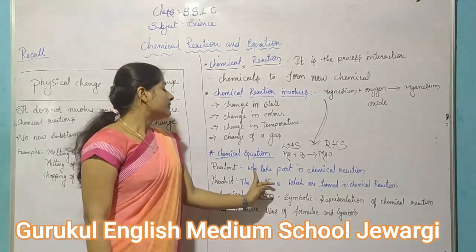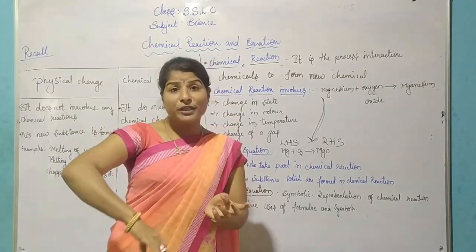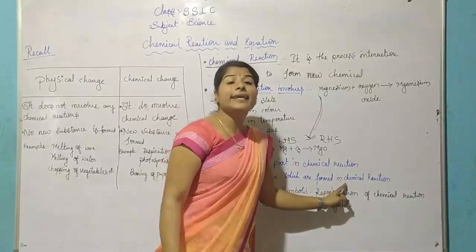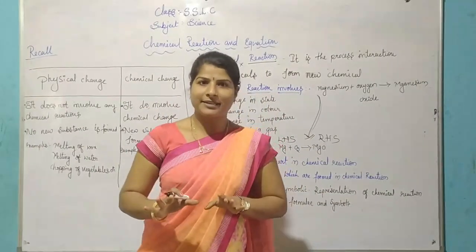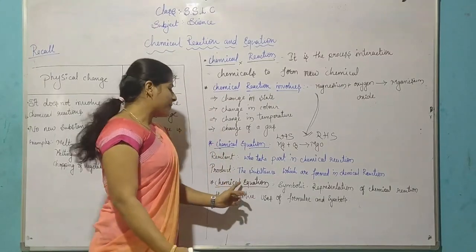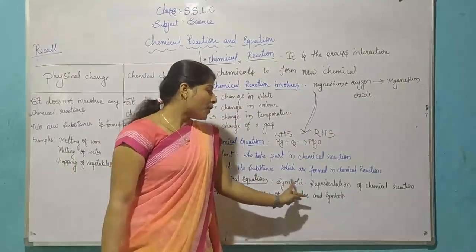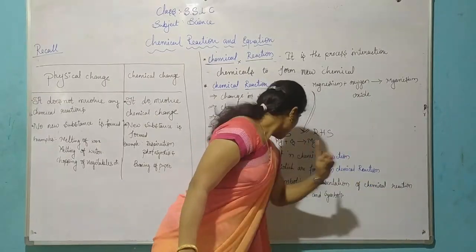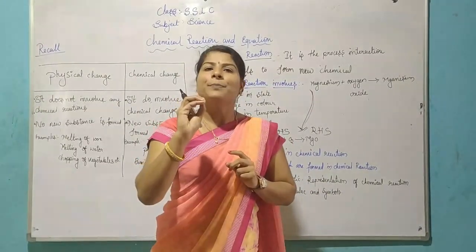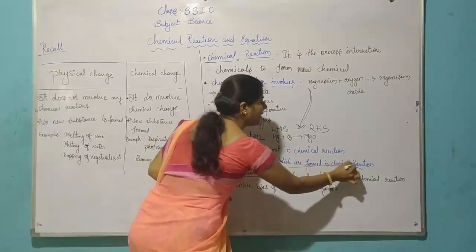What is meant by reactant? Who takes part in and is involved in the chemical reaction — that is called the reactant. The substance which is formed after the chemical reaction — that we call the product. A chemical equation is a symbolical representation of a chemical reaction that involves the use of formulas and symbols.